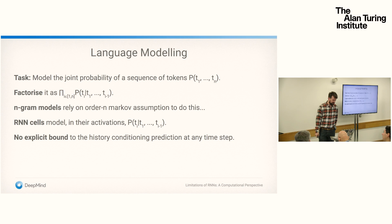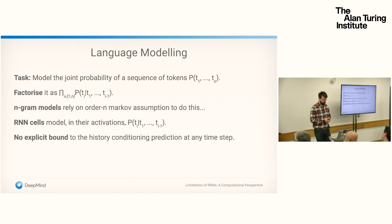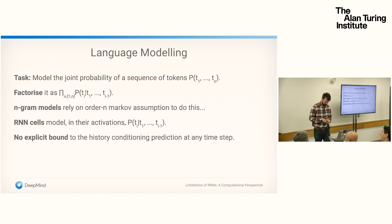Until neural networks took the lead, the popular way of training language models was to define n-gram models — count-based models relying on an order-N Markov assumption, saying that the next symbol depends on at most the previous N symbols. Recurrent neural network cells, by contrast, model in their activations the entire history of the sequence in theory. So unlike n-gram models, they don't require you to specify an explicit bound on history; your model could technically depend on the first word from a thousand words ago to predict the next word.